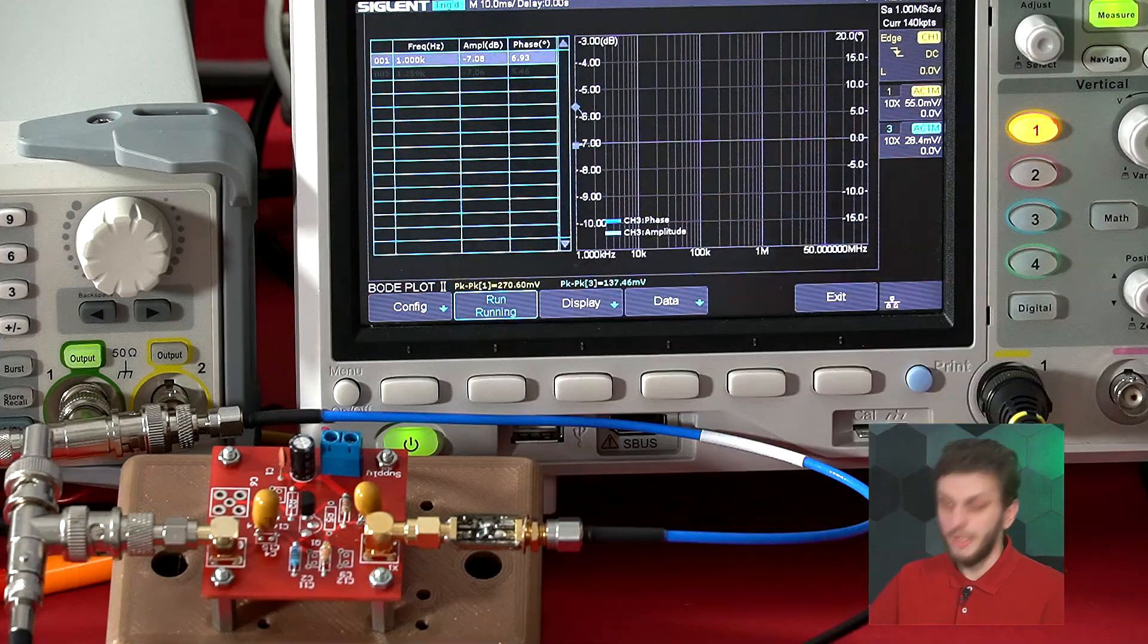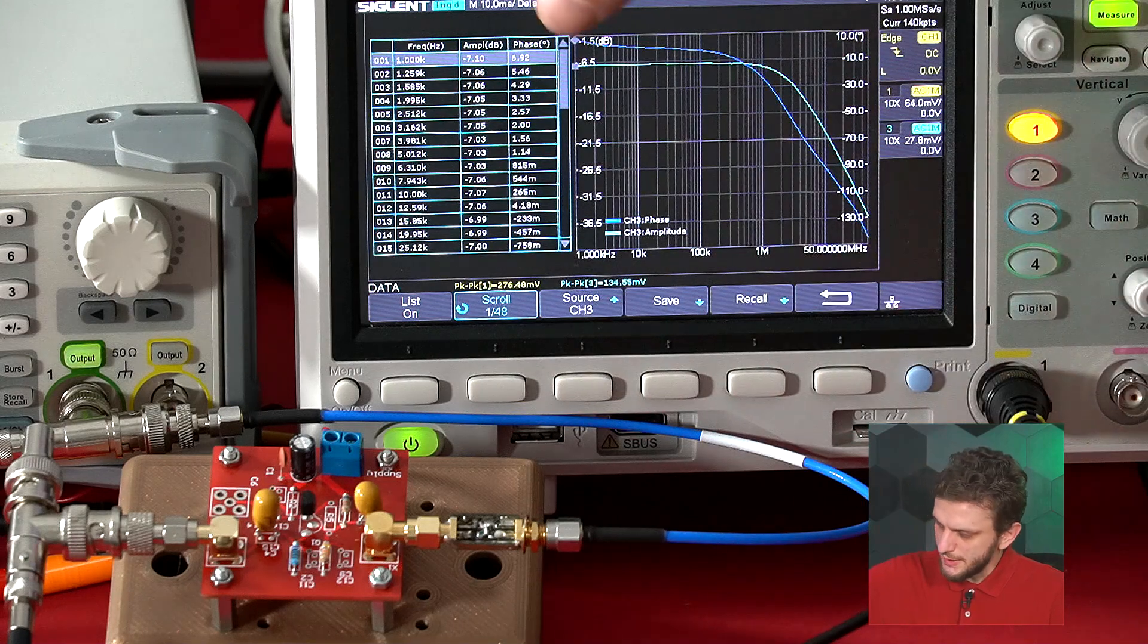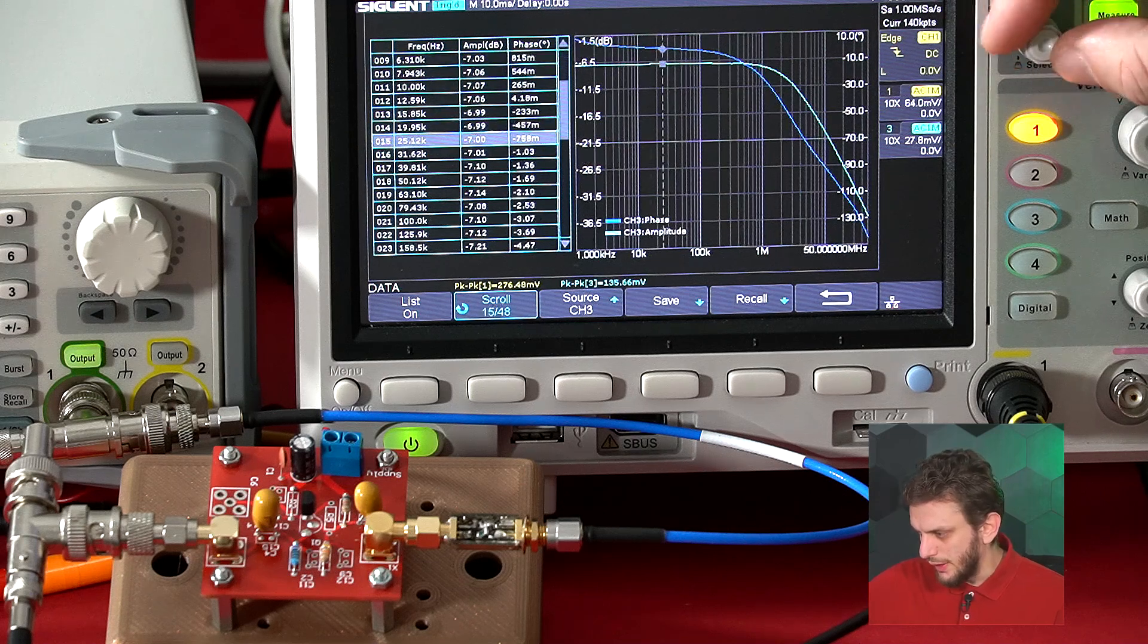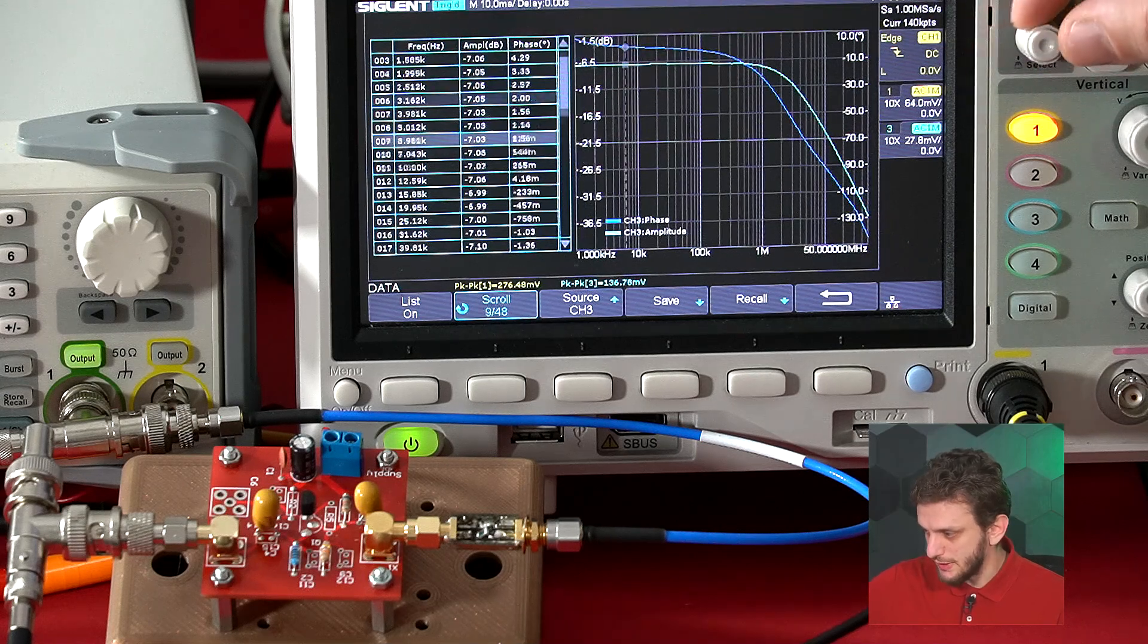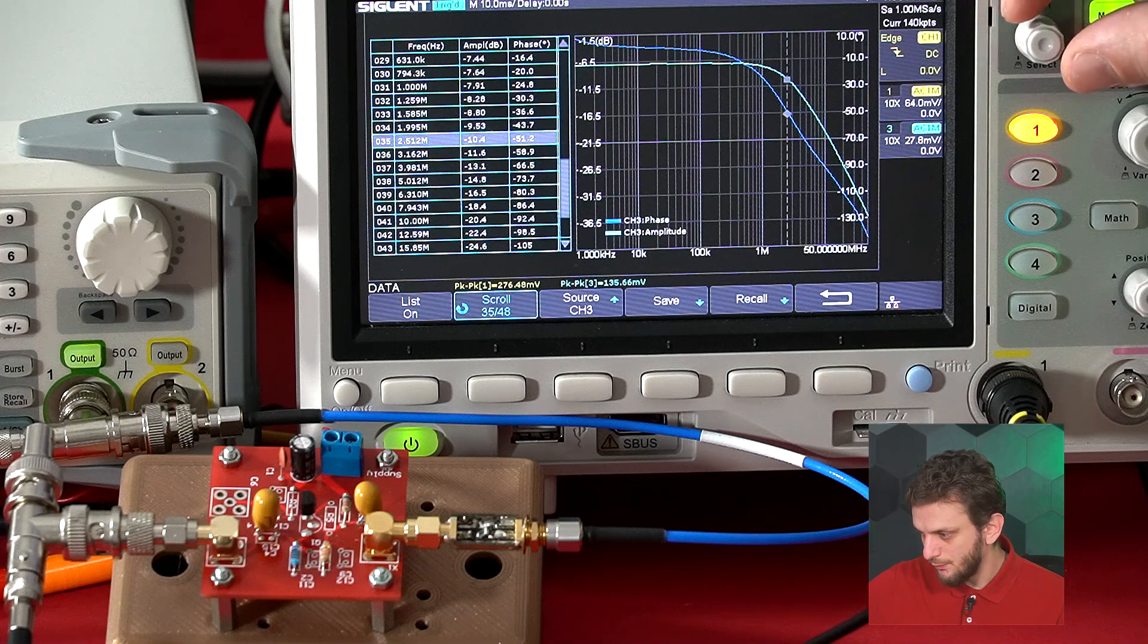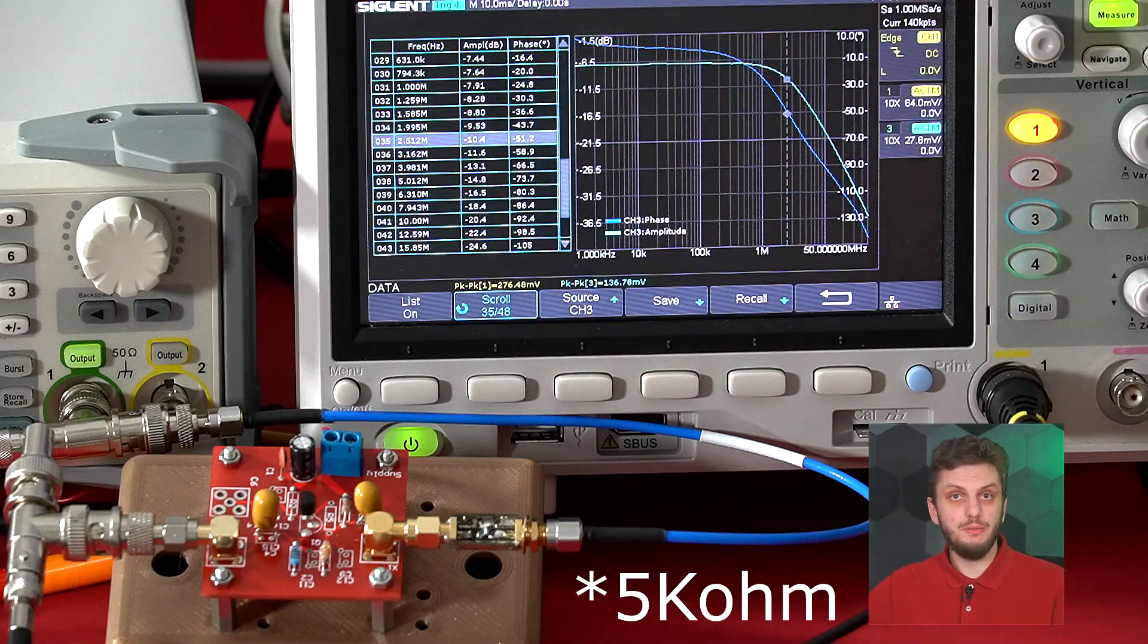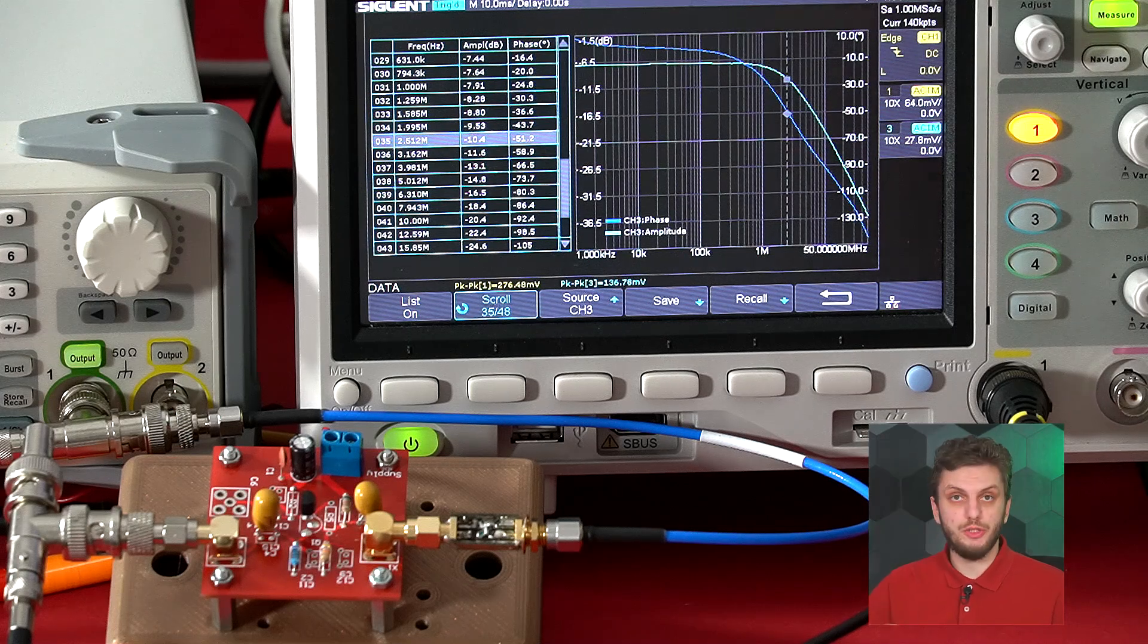If we do this and wait for the measurement finish, we can see that the amplifier has a flat response up until a certain frequency, and our minus 3 dB point, so the flat region is at about minus 7 dB, 3 dB below this is minus 10, is occurring at about 2.5 MHz. With a 4.7 kiloohm input impedance, our 3 dB bandwidth is up to about 2.5 MHz.